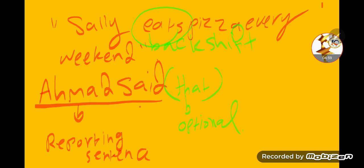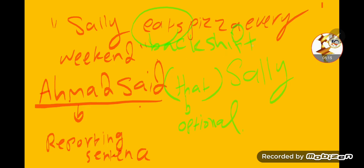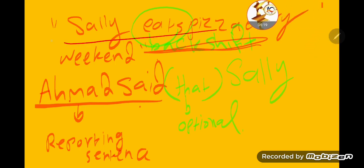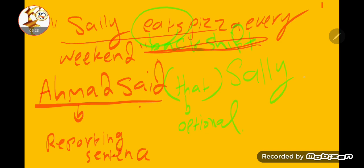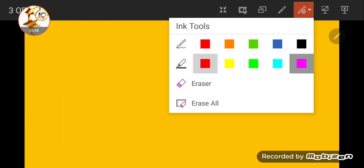Sally comes as she is as the subject. Even with 'that Sally,' I need back shift. If I want to back shift, present simple shifts to past simple. So 'eats' becomes 'ate' — 'that Sally ate pizza every weekend.' 'Every weekend' doesn't change. So here I did the back shift. There was no change in anything else. I will show you everything related to pronouns and time expressions we need to remember.